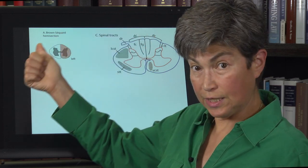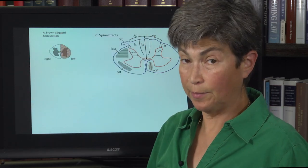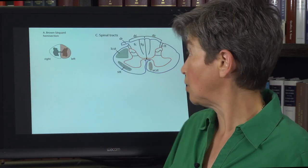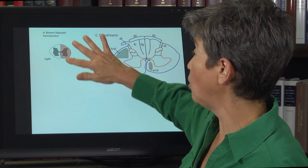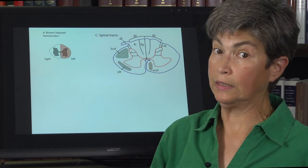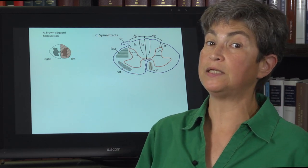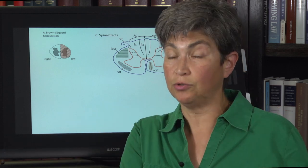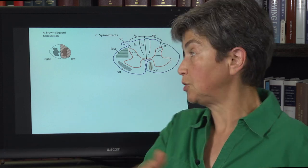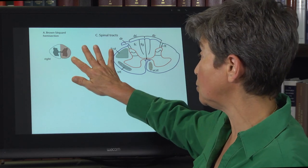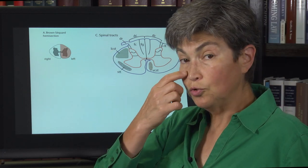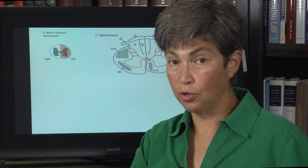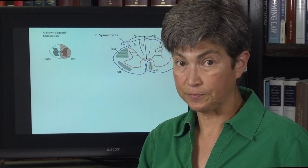Now let's take the spinothalamic pathway, which carries pain and temperature. What will be lost with this hemisection? It'll be pain and temperature below the lesion, but it will be contralateral to the lesion. So with this lesion on the left, we'll lose pain and temperature on the right below the level of lesion.